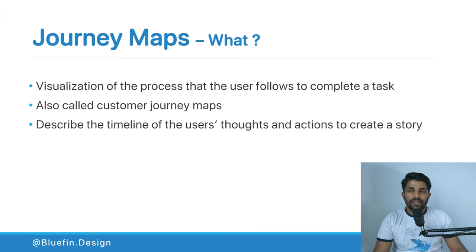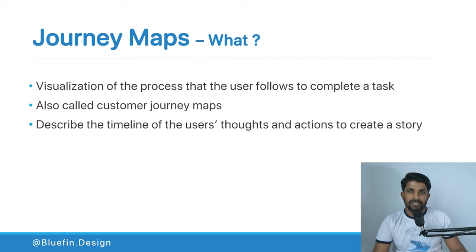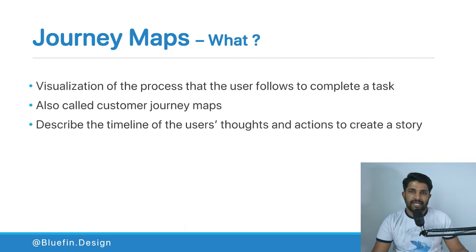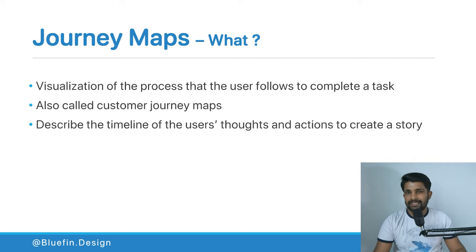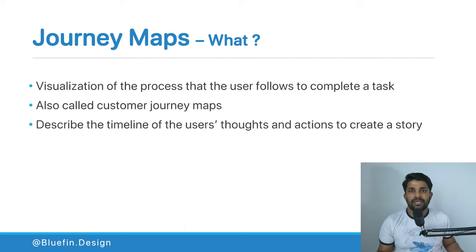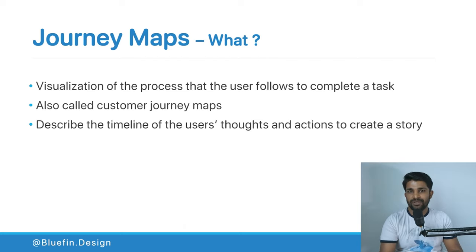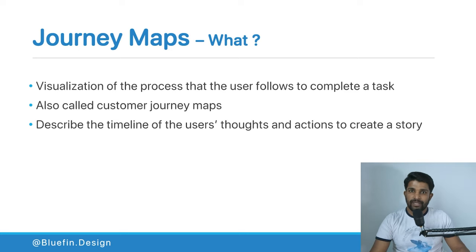So what is a journey map? It's basically a visualization of the process that the user follows to complete a particular task. You're noting down the process that your potential user is following to complete a particular task or a set of tasks. It's also called a customer journey map or user journey map — basically the same thing. They describe the timeline of the user's thoughts and actions to create a story which you can share with different stakeholders. The entire timeline is broken into different steps.